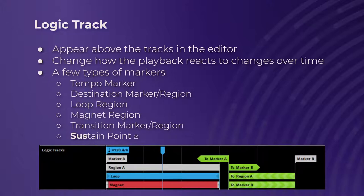The two most important ones are transitions. Basically, when playback hits a transition and the conditions are met, the playback position will jump to wherever it's set to. In my example, I have one set to marker A and one set to marker B. You can target regions with this, and yes, you can target loop and magnet regions as well — they're super versatile. They also have probability and conditions, with regions having the addition of quantization intervals. These are one of the big essentials you're going to want to know.